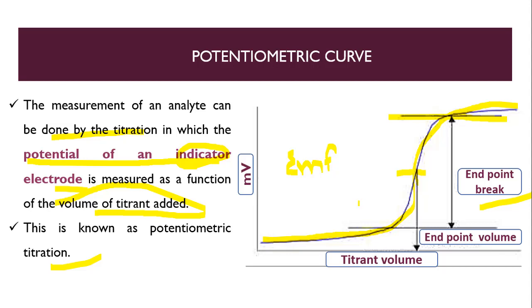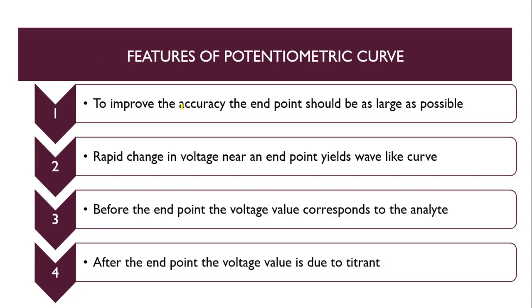Now we will see some features of the potentiometric curve. To improve accuracy, the end point should be as large as possible — we have to add titrant drop by drop to the analyte. There will be one point when rapid change will be there in EMF, and that will be our end point, and it will produce a wave-like curve. Before the end point, the voltage value corresponds to the analyte — there is an equivalence point — and after the end point, the voltage value is due to the titrant.